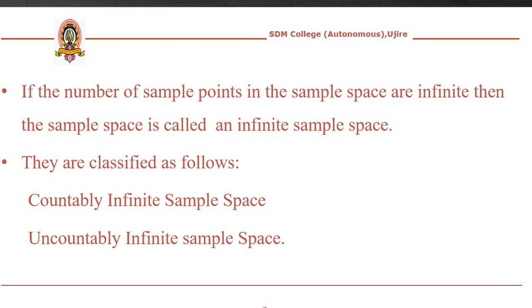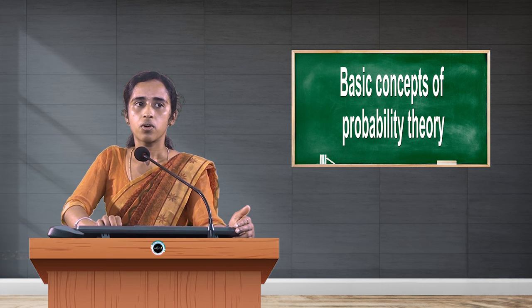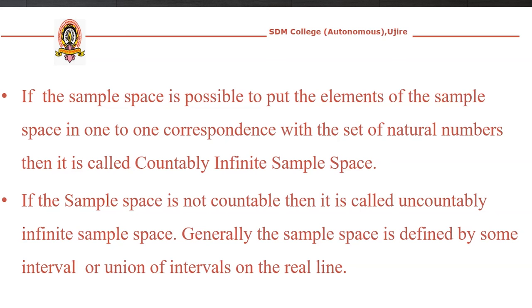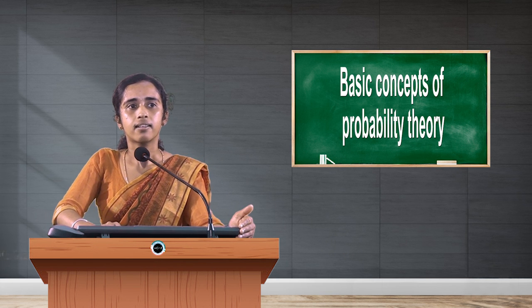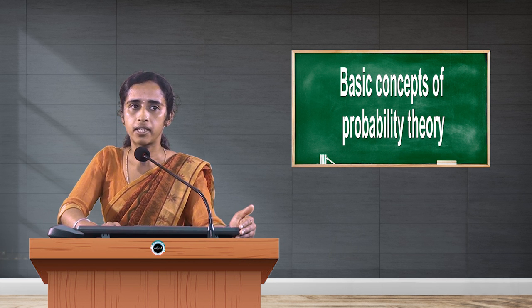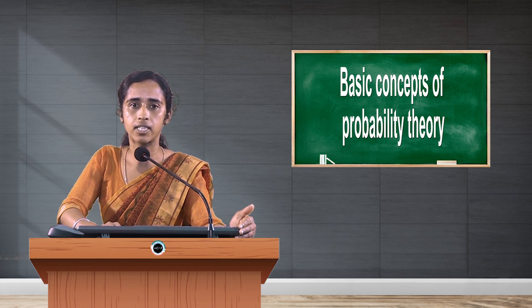In the case of infinite sample space, there are two types: countably infinite and uncountably infinite. A countably infinite sample space means it is possible to put the elements of the sample space in one-to-one correspondence with the set of natural numbers. Examples include the lifetime of electronic components and the number of customers visiting departmental stores.